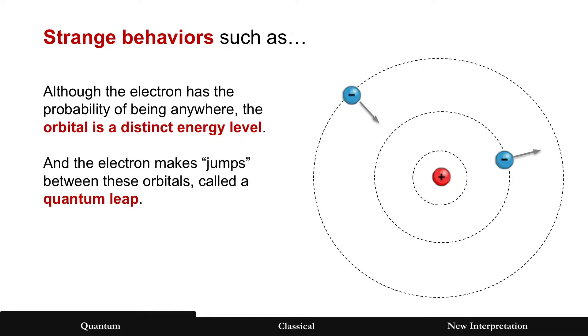And those orbitals come in distinct energy levels, and the electron makes a jump between those levels called a quantum leap. It doesn't go from one to two. It might go from one to four, skipping two and three. Why is that?